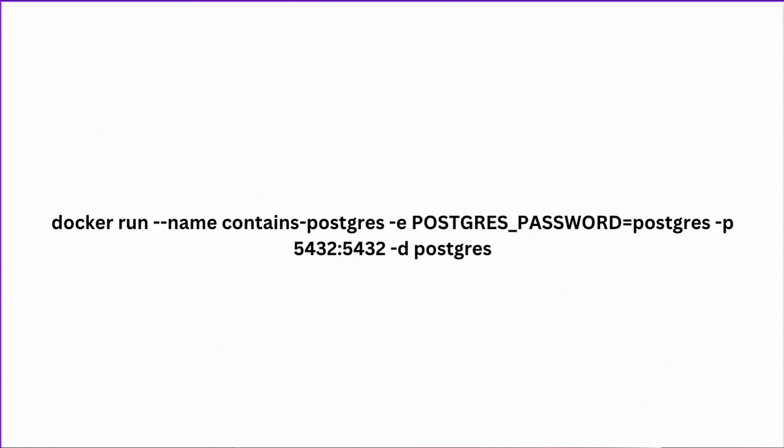`-d` specifies that you want the container to run detached — meaning it runs in the background. We're not going to see anything on the terminal; we just want this Postgres container running in the background without all the logs. After that, we specify the image we're going to use to create the container. This is the recipe, and now it's time to cook up the actual container.